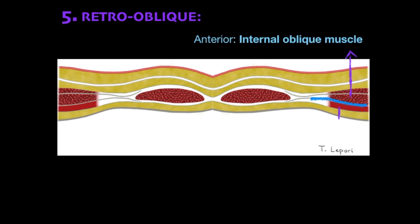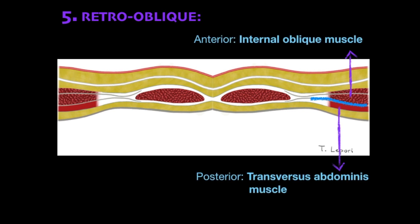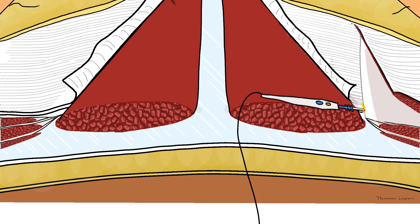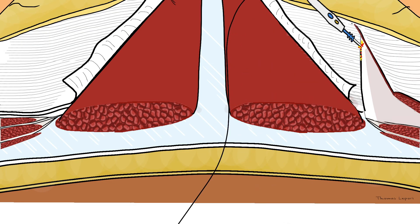The retro-oblique plane is delimited anteriorly by the internal oblique muscle and posteriorly by the transversus abdominis muscle.